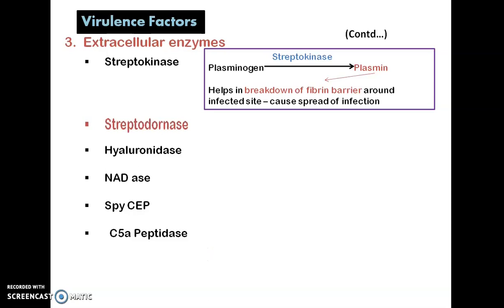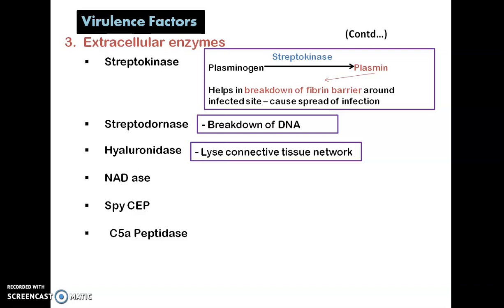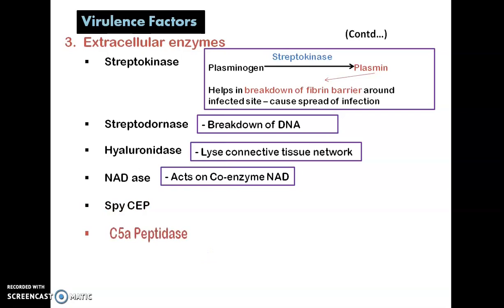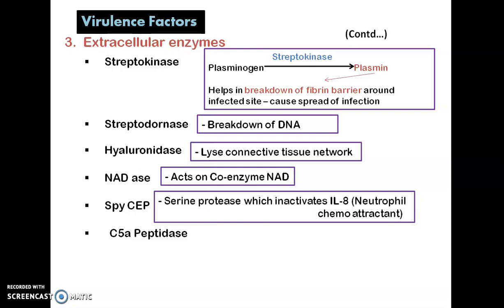Streptodornase helps in the breakdown of host DNA. Hyaluronidase helps in the lysis of connective tissue, breaking down the connective tissue network. NADase acts on the coenzyme NAD. The next two enzymes are SpeB-CEP and C5a peptidase — these two are serine proteases which inactivate interleukin-8, a neutrophil chemoattractant.